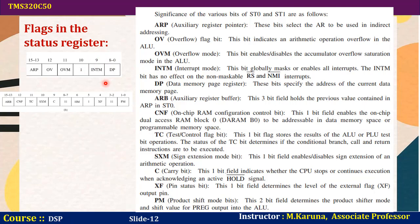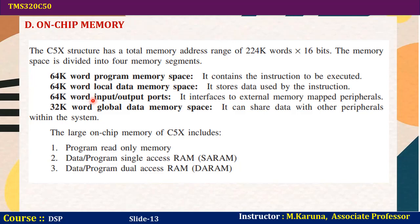The C5x structure has a total memory address range of 220K words of 16-bit each. The memory space is divided into four segments: 64K word program memory space containing instructions to be executed; a 16K word local data memory space storing data used by instructions; 64K word input/output ports interfacing to external memory-mapped peripherals; and 32K word global data memory space for sharing data with other peripherals within the system. The large on-chip memory includes program ROM, single-access RAM (SARAM), and dual-access RAM (DARAM).